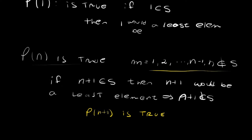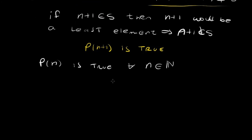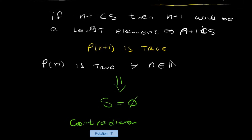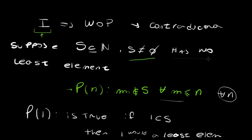By induction, P of n is true for all natural numbers. But if this is true for all natural numbers, then S is empty — contradiction, since I assumed S was non-empty. The contradiction arose because I assumed S had no least element. Therefore any non-empty subset of the natural numbers has a least element. That's the well-ordering principle, which is what we wanted to prove.